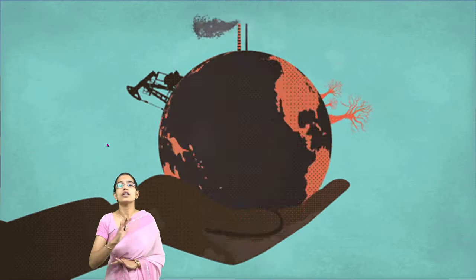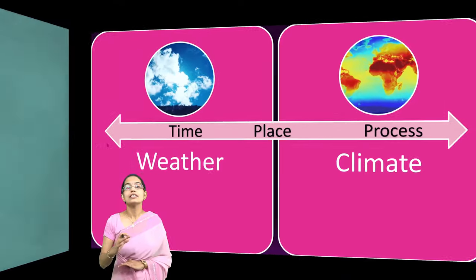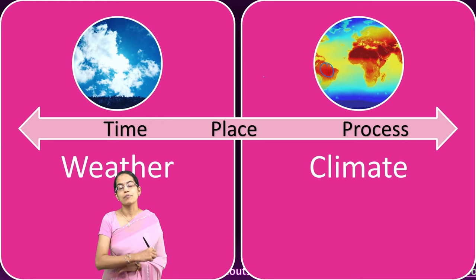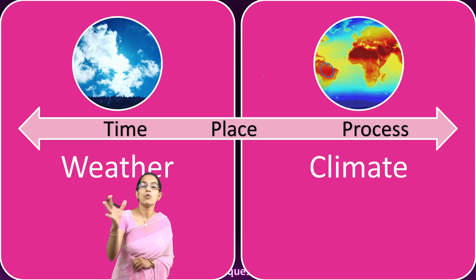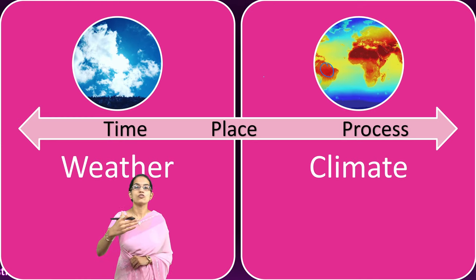On the other hand, climate is a long-term average — an average of around 20 to 30 years taken over a large region — and that determines the climate. For example, there is equatorial type of climate in the Amazon rainforest, which signifies most of the region covered by Brazil and nearby regions of Venezuela and so on.